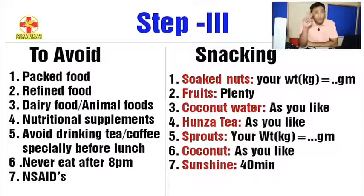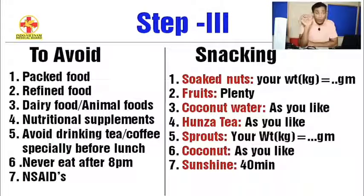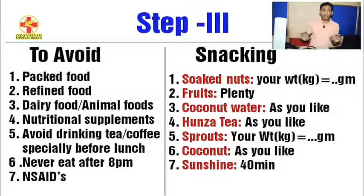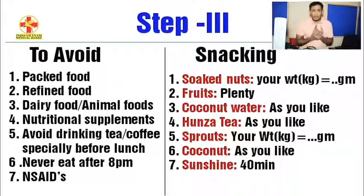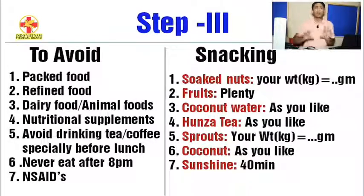Step three is about what not to do. There are two things to avoid. Number one: no animal food. Any food that comes from animals, you do not have to take it — like milk, chicken, or fish. You do not have to take it.